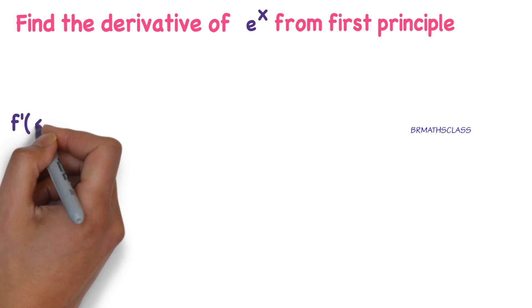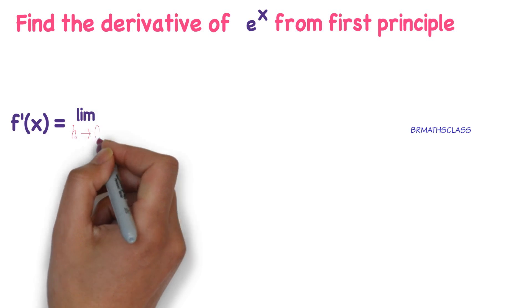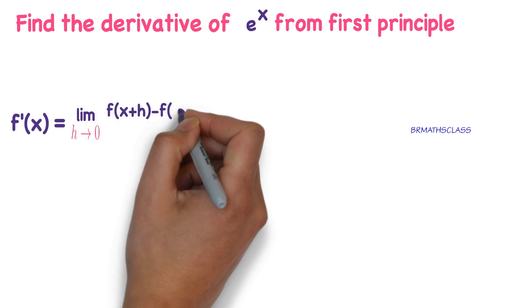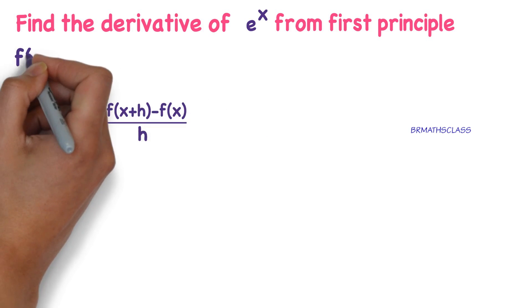We know what is first principle. f'(x) equals limit h tends to 0, f(x+h) minus f(x) divided by h. This is called the first principle of derivative.